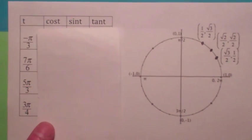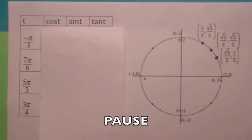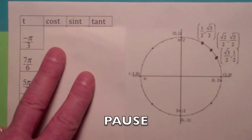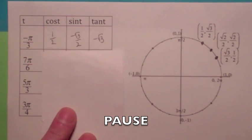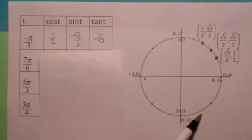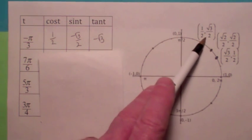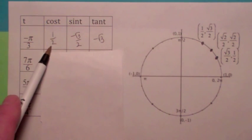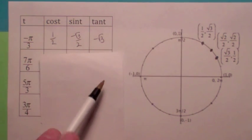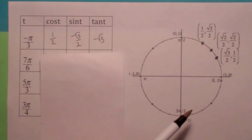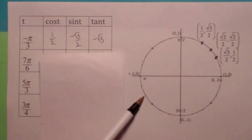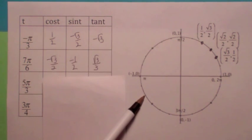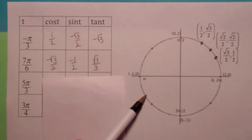Why don't you try some — go ahead and see if you can fill this table out. For t = -π/3, that's in the fourth quadrant, so the coordinates are the same as the reference point but x is positive and y is negative, and the tangent becomes -√3. For t = 7π/6, positive 7π/6 is right down there in the third quadrant — x and y are both negative, so the tangent is positive: √3/3.